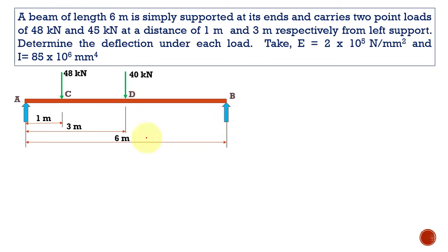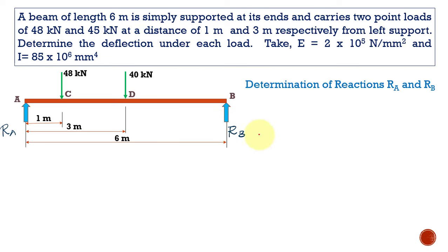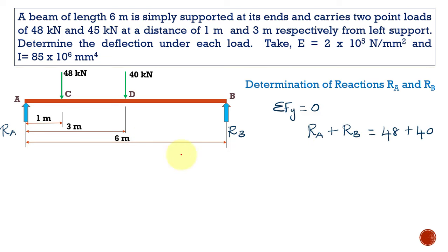It is simply supported. To construct the free body diagram, we must know the reaction force at A and the reaction force at B. At A we have reaction force Ra and at B we have reaction force Rb. Now let us find out the reaction forces at A and B. For that, we need to apply the equilibrium concept — that is, ΣFy = 0, meaning the net forces acting in the vertical direction equal zero. So Ra + Rb equals 48 + 40. These two are the point loads acting in the downward direction, so Ra + Rb = 88.